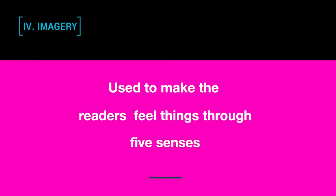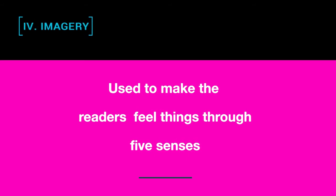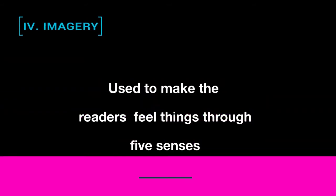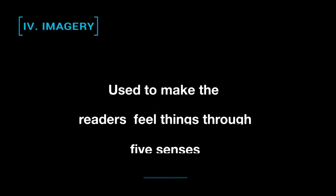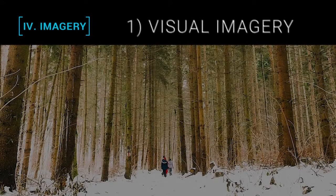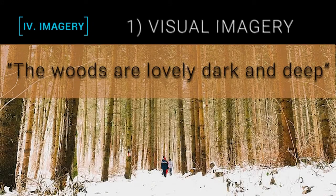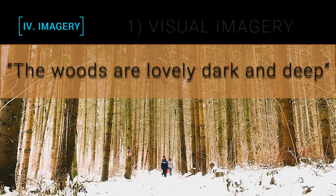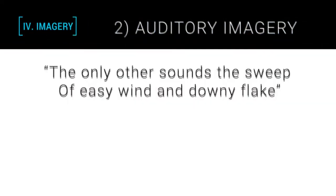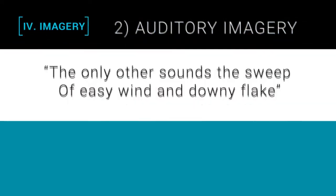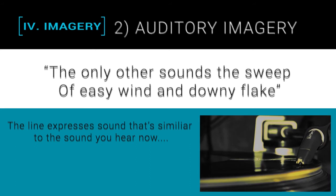Fourthly, imagery. Imagery is used to make the readers feel things through their five senses. Here we can see two imageries. First, visual imagery: 'The woods are lovely, dark and deep.' Second, auditory imagery: 'The only other sounds the sweep of easy wind and downy flake.'